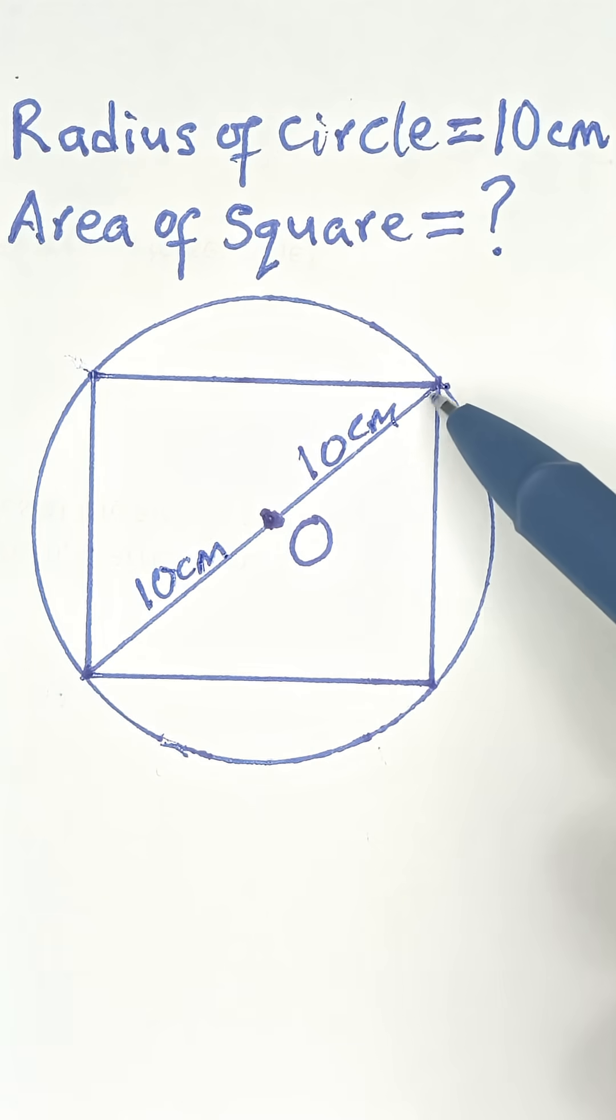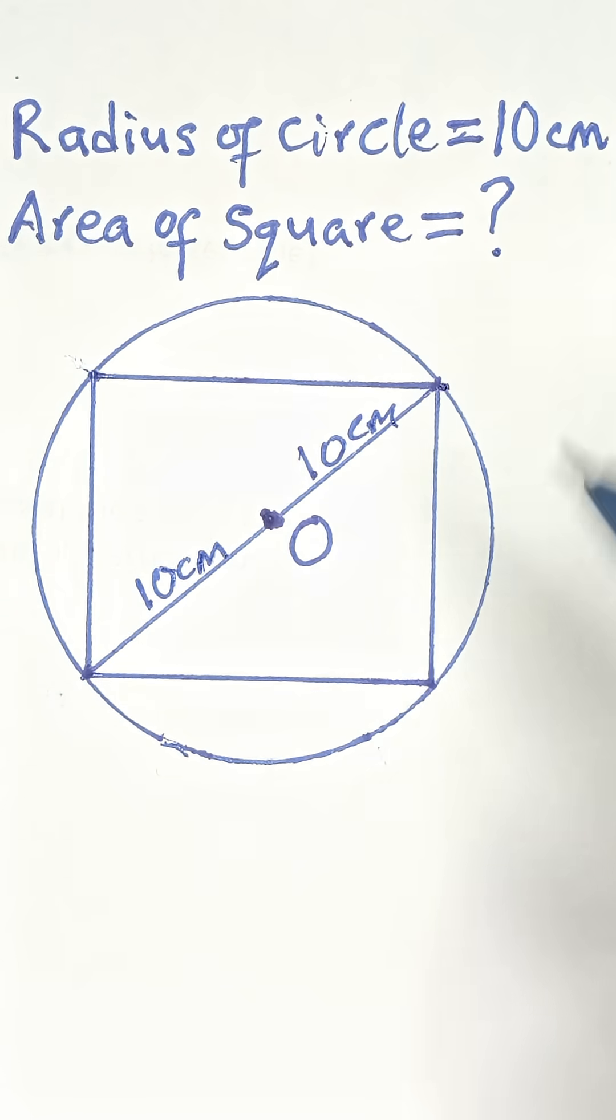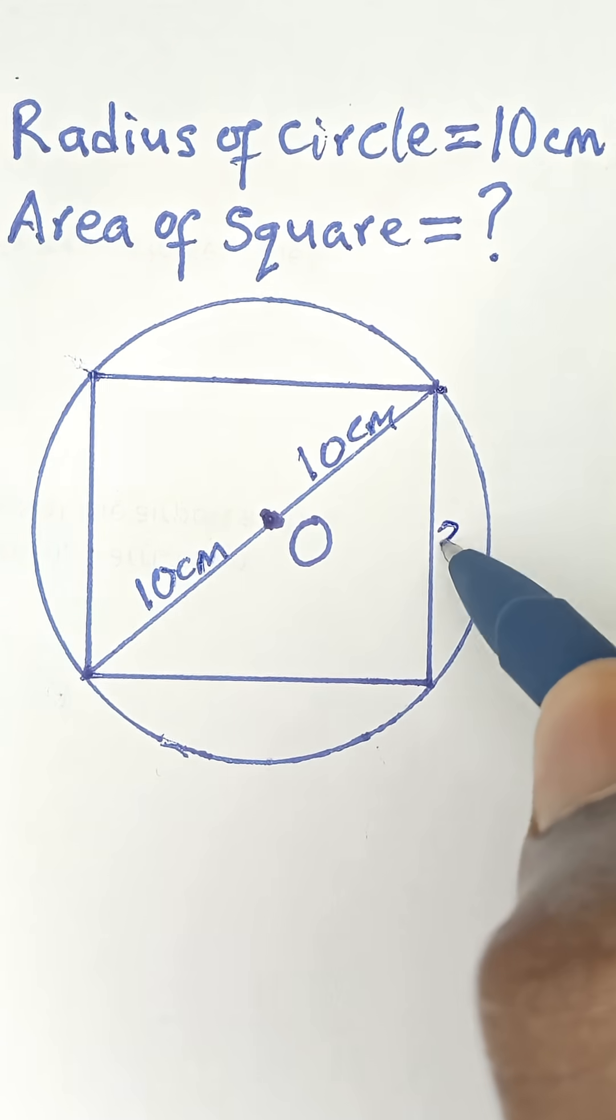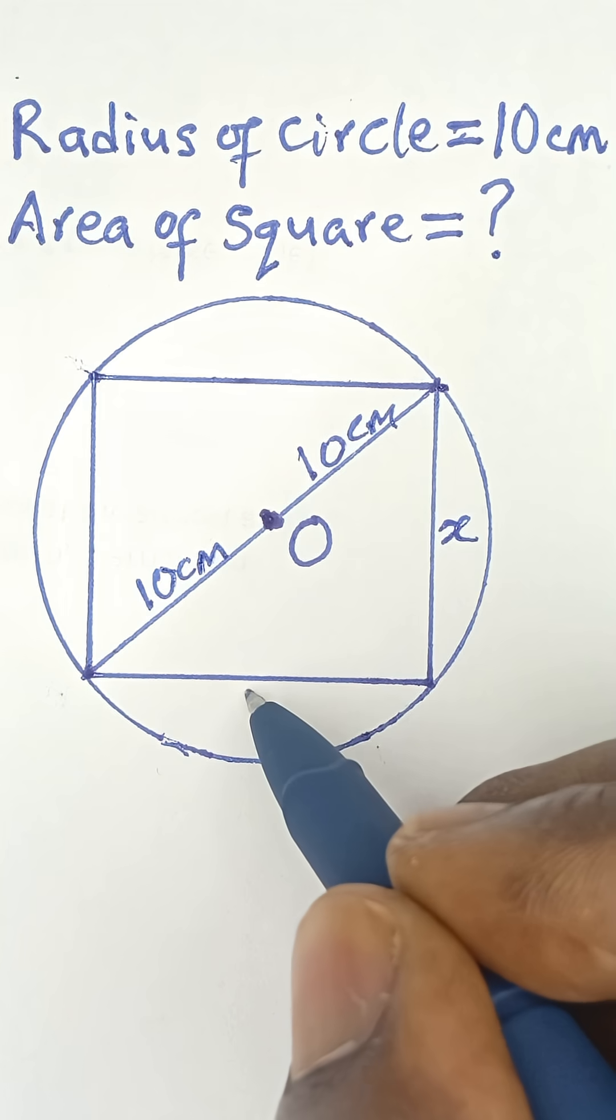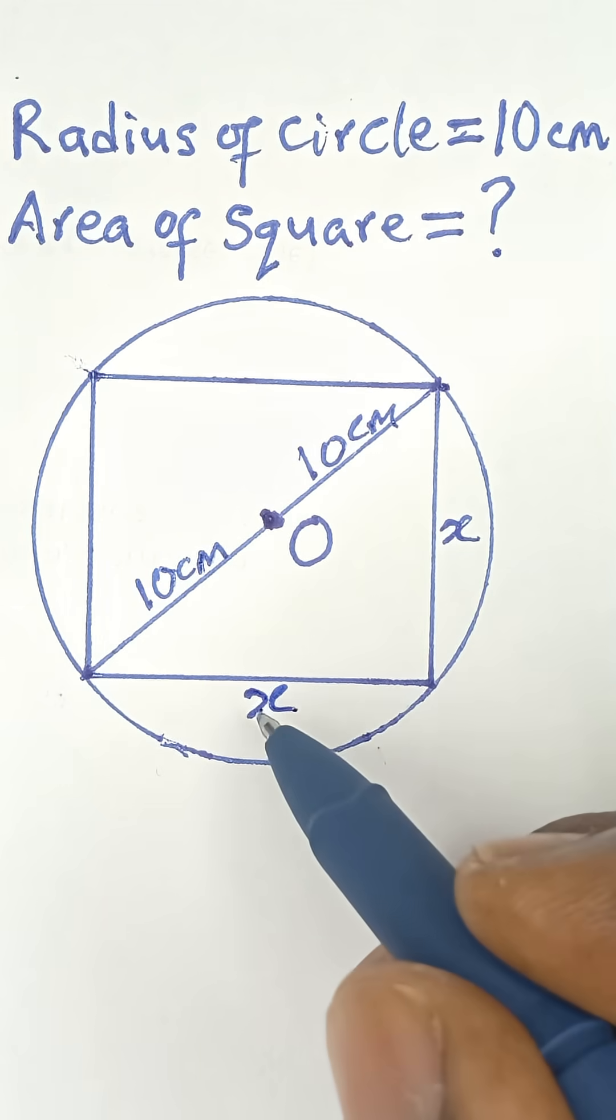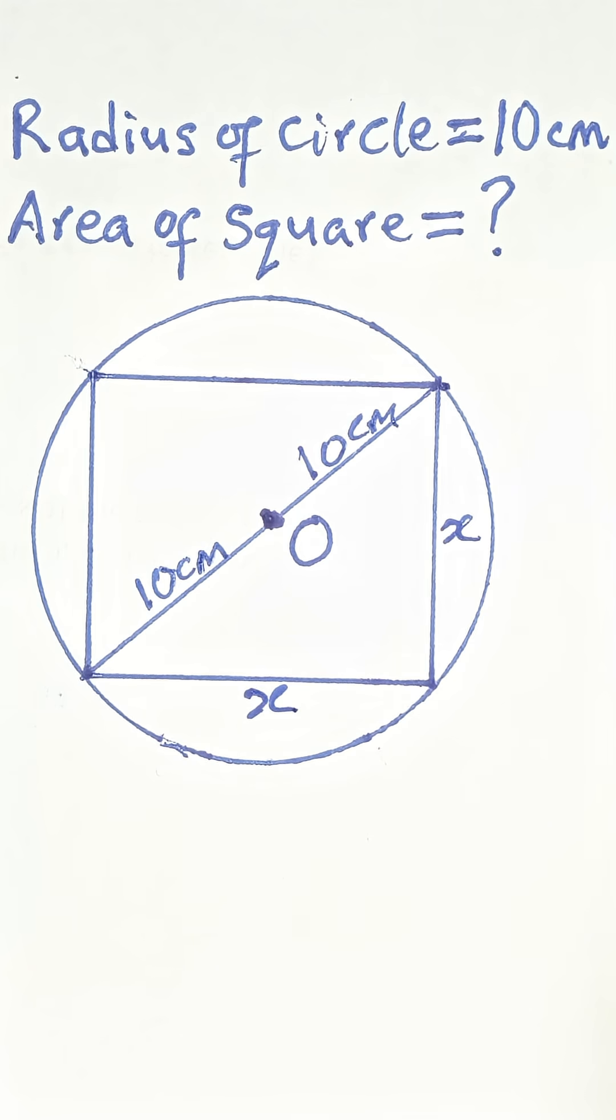So that means this diameter is 20 centimeters. Now let's take the side of the square as x. And don't forget, all sides of the square are equal, so if this side is x, this side is also x.